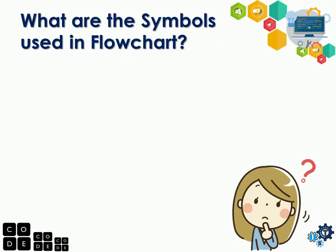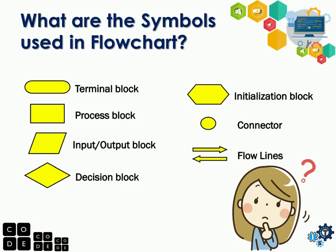What are the symbols used in a flowchart? For the symbols, we have the following: terminal block, process block, input or output block, decision block, initialization block, connector, and flowlines.